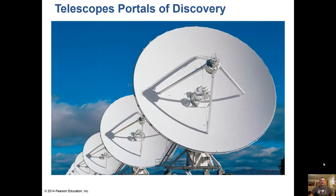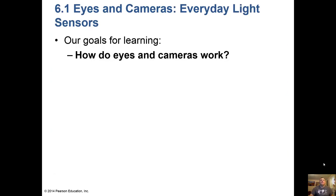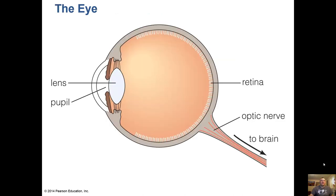So how do our eyes and cameras work? Here's our eye — we have a lens and a pupil, light goes back to the retina in the back, and an optic nerve that goes to the brain.